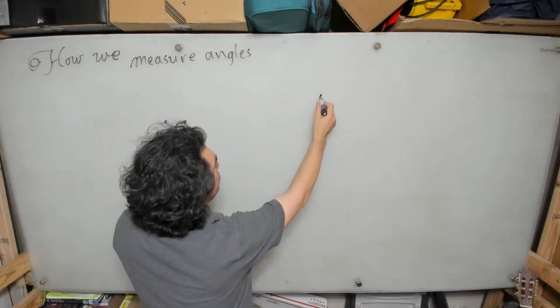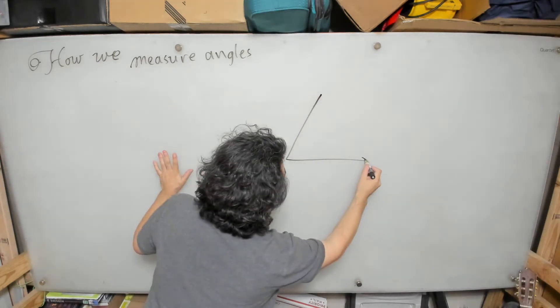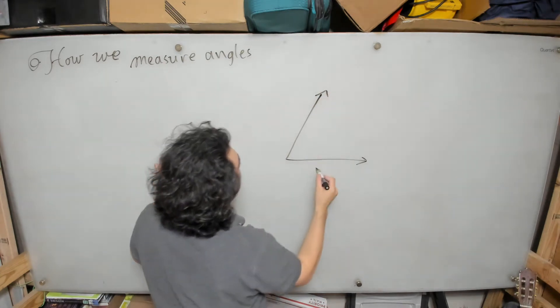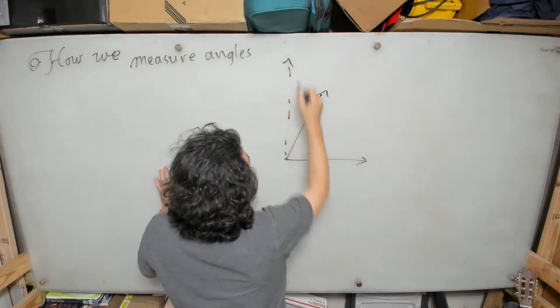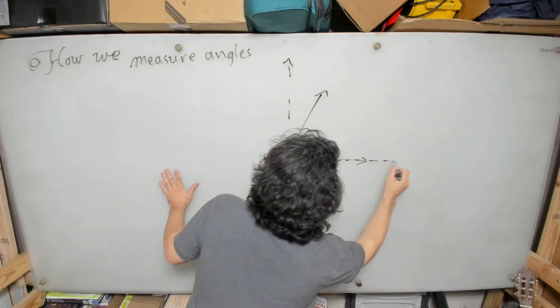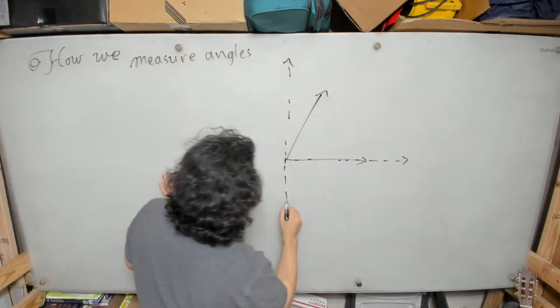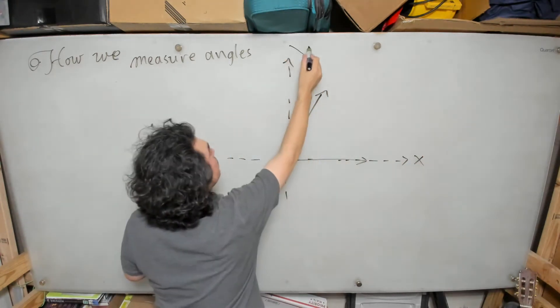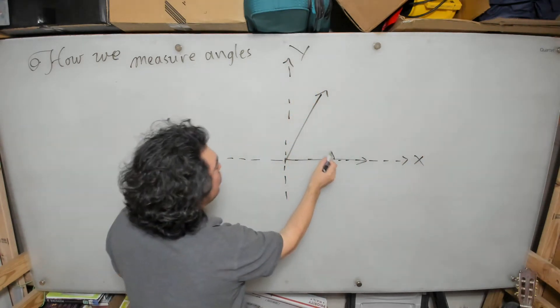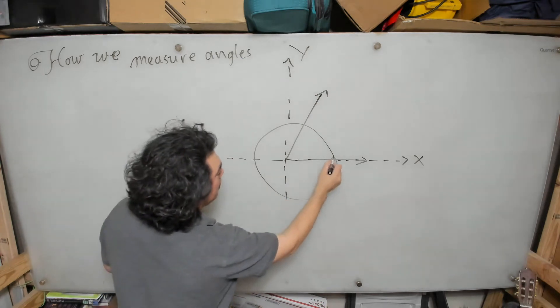What we have seen is that if we have an angle, like let's say this is my angle, we have seen that if I put the xy axis on it like this and I put my unit circle, then...